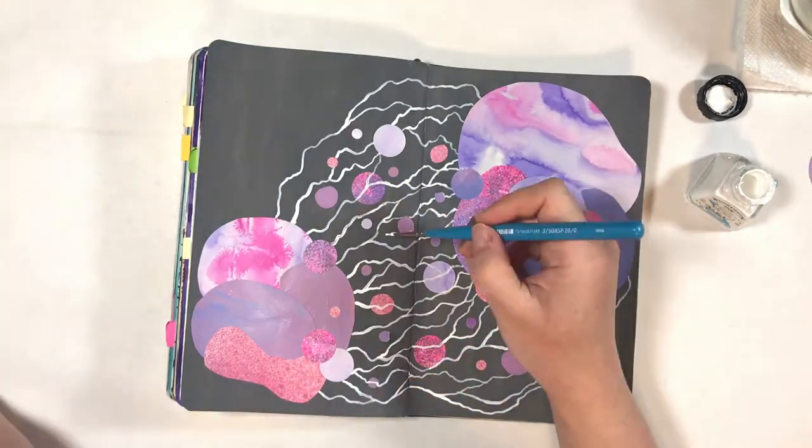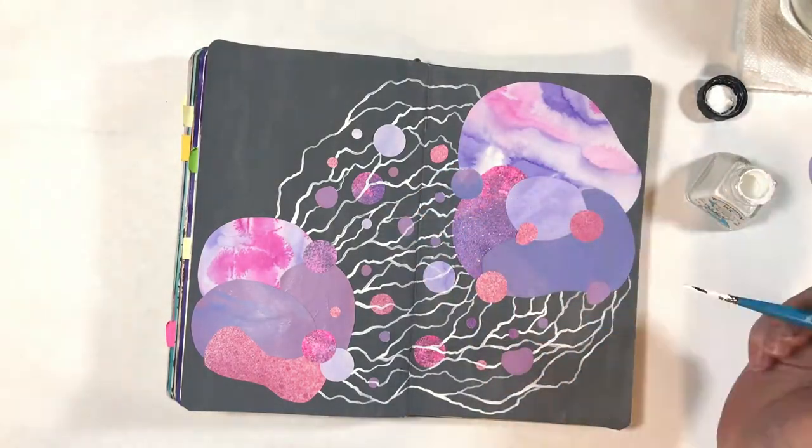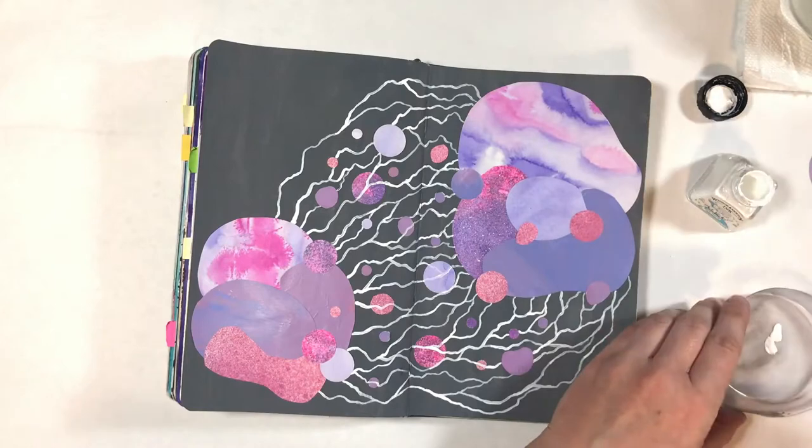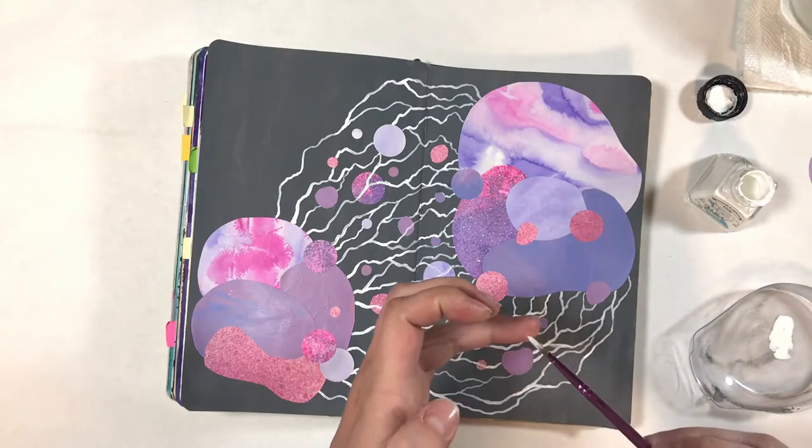From there on out, all I do is I splatter the page with a bit of the leftover ink with my paintbrush. Sometimes I use this sort of technique as part of a larger page where I'll have it just kind of off in the corner.